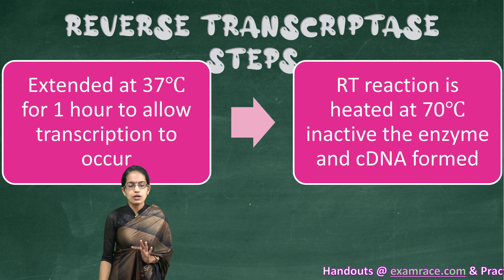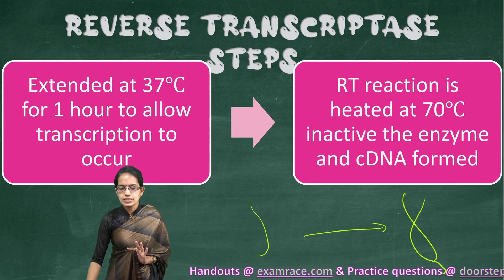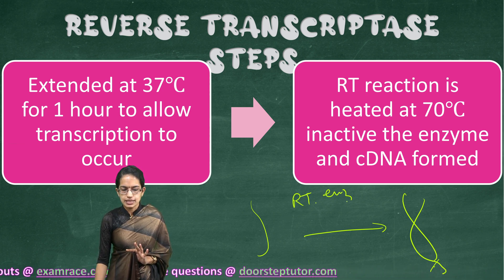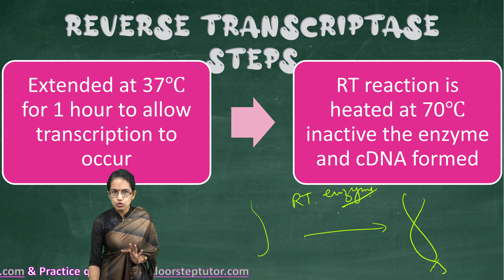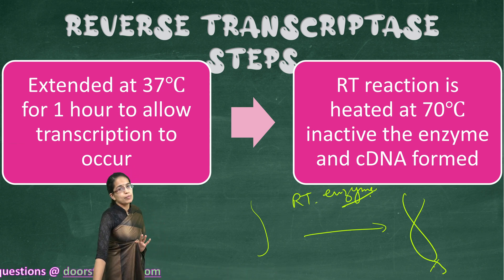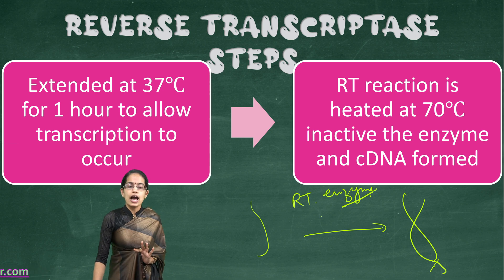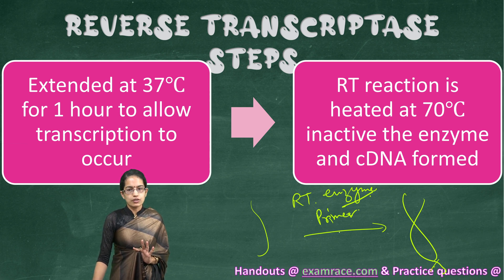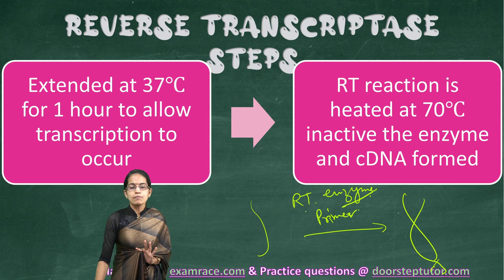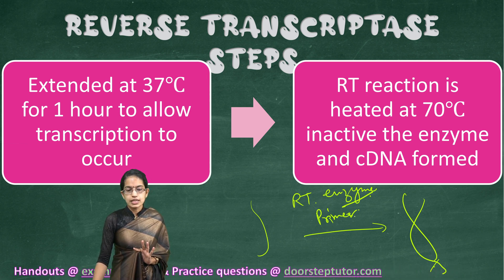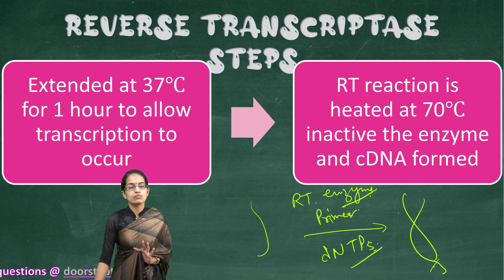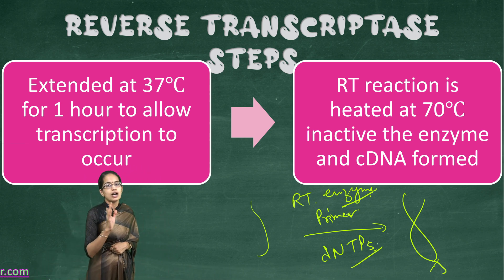This is how we have the formation of RNA to double-stranded DNA. What is required, as mentioned, is the reverse transcriptase enzyme — commonly Superscript 3 or MMLV. We also need the primer, which anneals to the RNA, and the dNTPs. With these components, the reverse transcriptase process takes place.